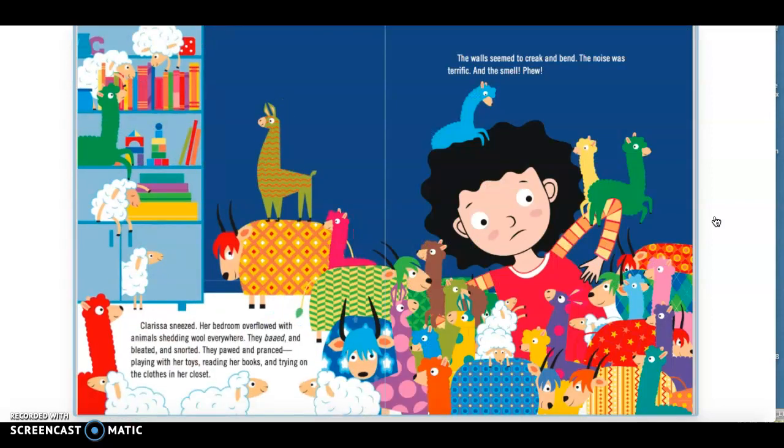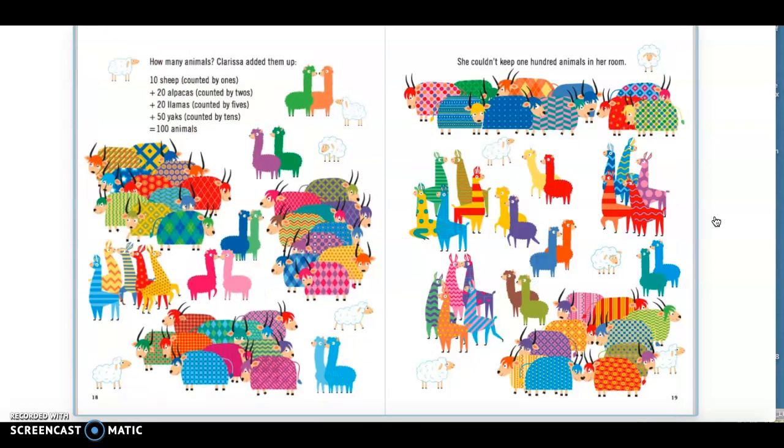Clarissa sneezed. Her bedroom overflowed with animals shedding wool everywhere. They bawd and bleated and snorted. They pawed and pranced, playing with her toys, reading her books, and trying on her clothes in her closet. The walls seemed to creak and bend. The noise was terrific, and the smell, phew! How many animals? Clarissa added them up. Ten sheep, twenty alpacas, twenty llamas, and fifty yaks equals a hundred animals.